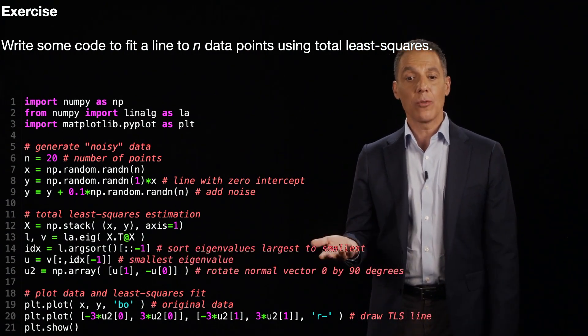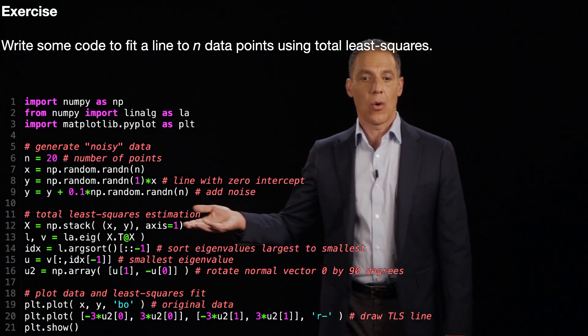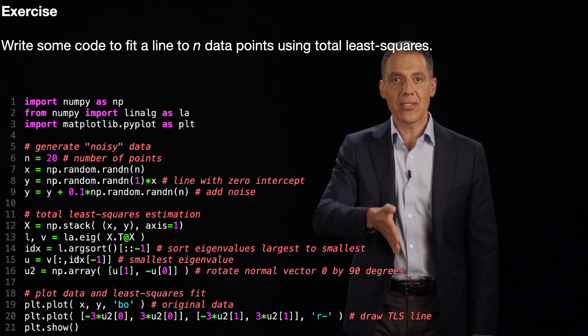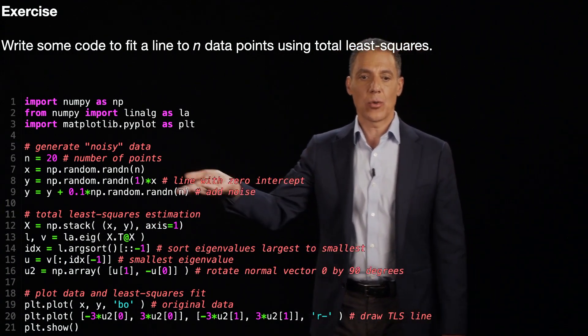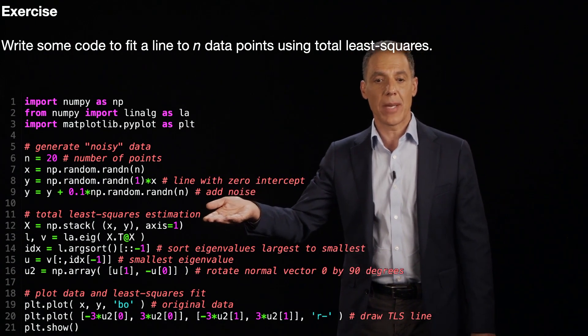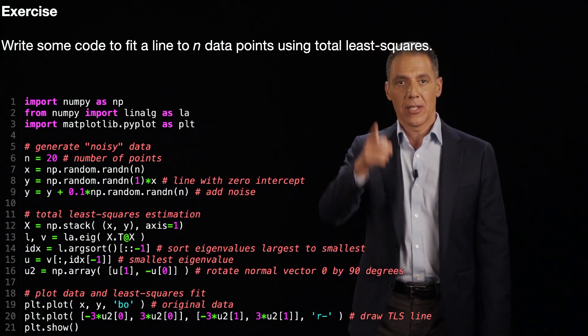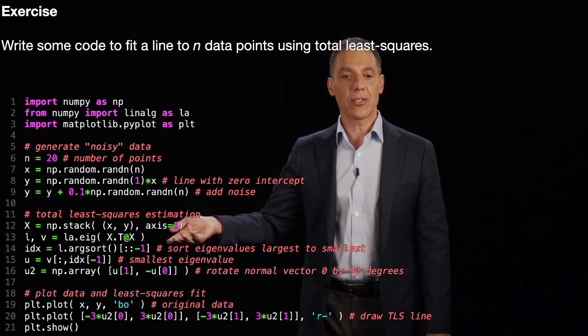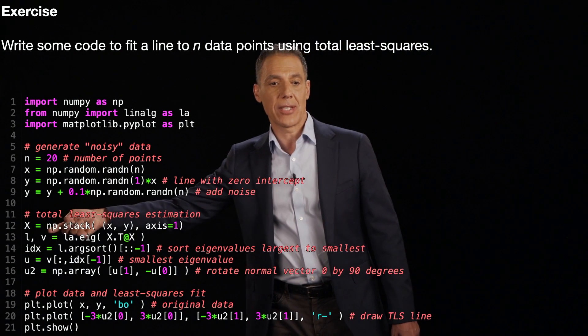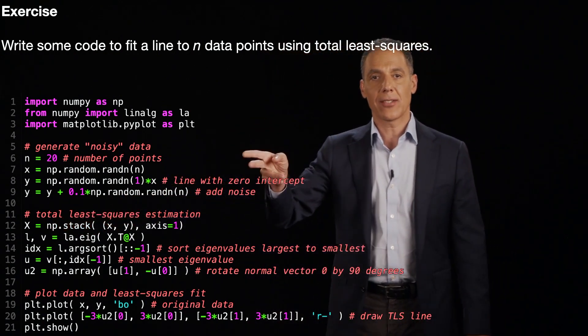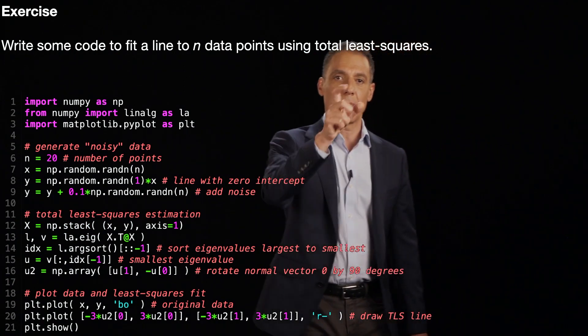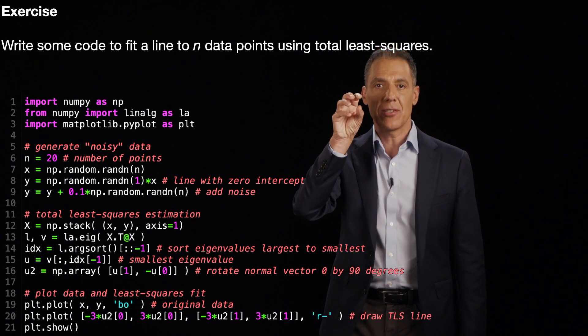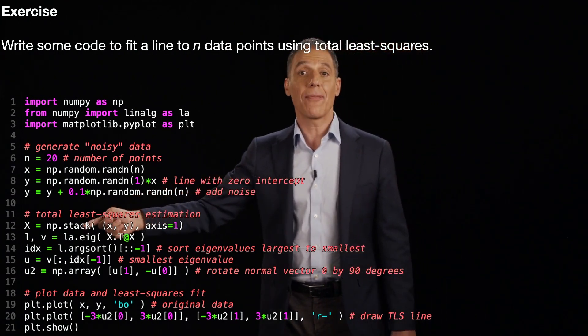All right. Again, not a lot of code, but a lot of details here that have to get right. So I'm going to first of all build my matrix. I'm going to stack in the X's and the Y's associated with my data into an N by 2 matrix. That axis equals 1 again, it's telling me to stack things into the columns. I'm going to compute the eigenvectors and eigenvalues. That's what I'm putting into L and V of X transpose X. X is N by 2. X transpose is 2 by N. The product is 2 by 2. I've got two eigenvectors and two eigenvalues. I want the smallest one.